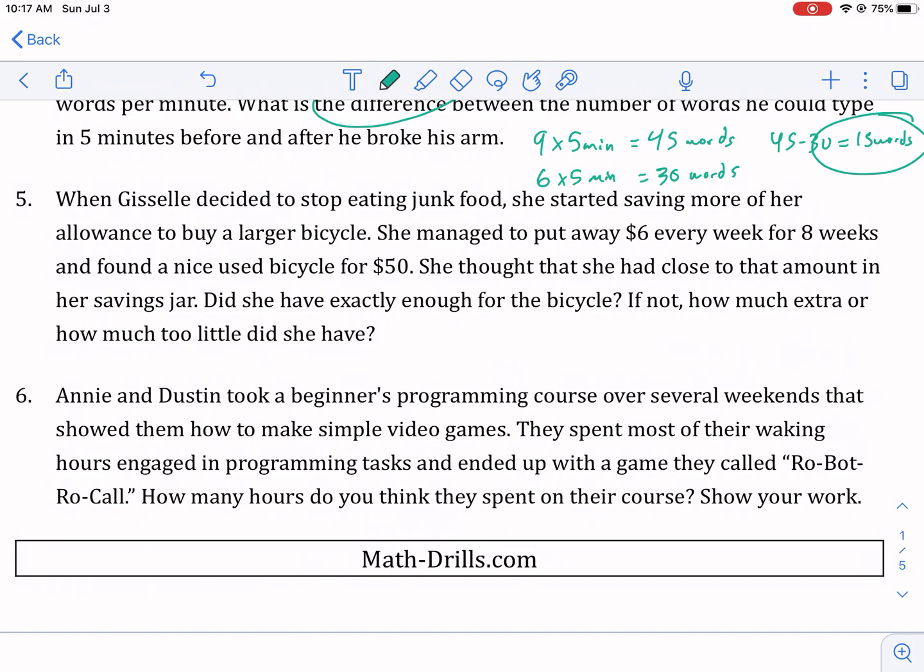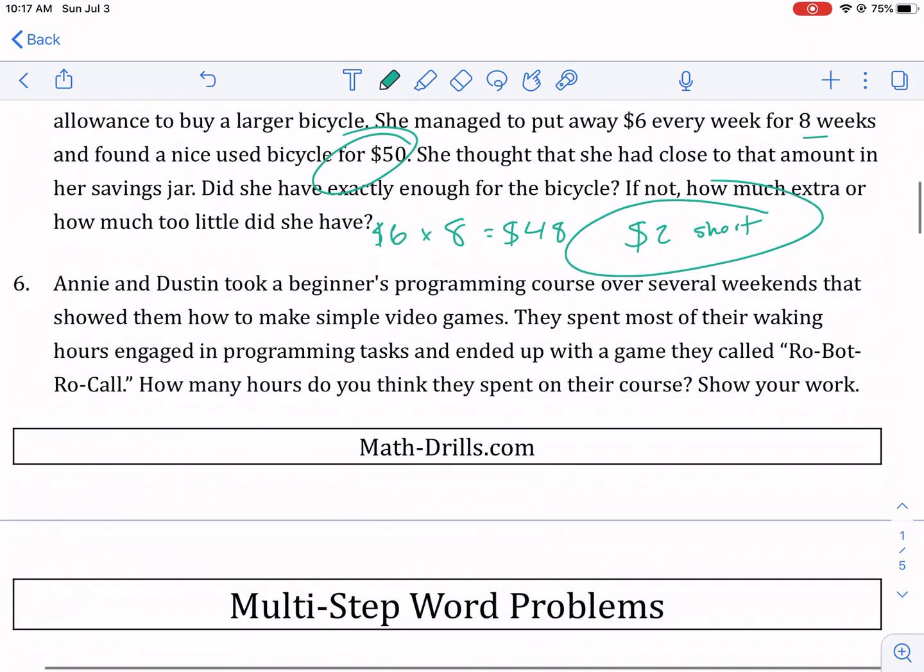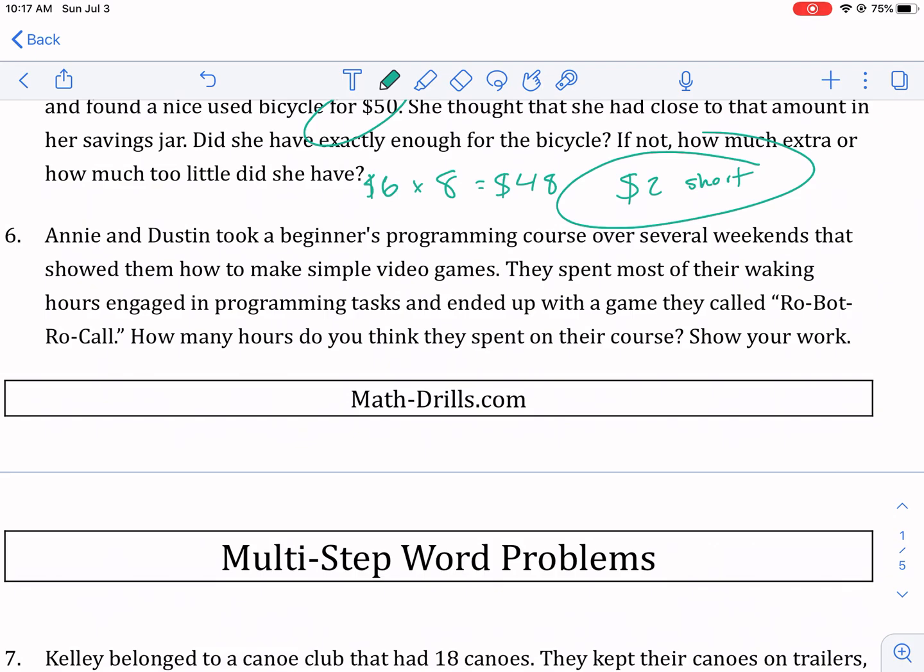When Giselle decided to stop eating junk food, she started saving more of her allowance to buy a larger bicycle. She managed to put away $6 every week for eight weeks. So $6 times eight weeks. I'm just doing this math right away. For eight weeks, that means we're multiplying. Six plus six plus six times eight. That's what we're doing. That's $48 she saves. She found a nice bike for $50. She thought she had close to that amount. Did she have exactly enough for the bicycle? She did not. She was $2 short. That's what it's asking. So $2 short for that one.